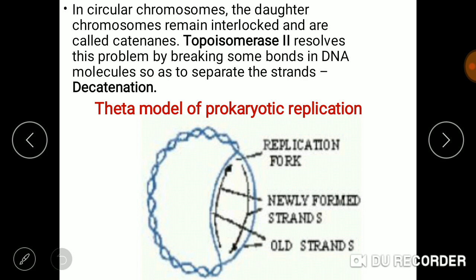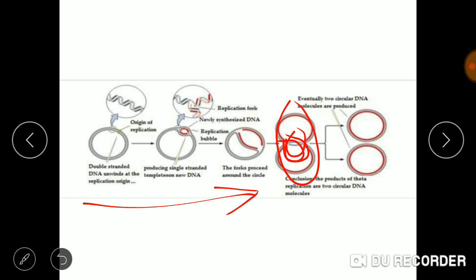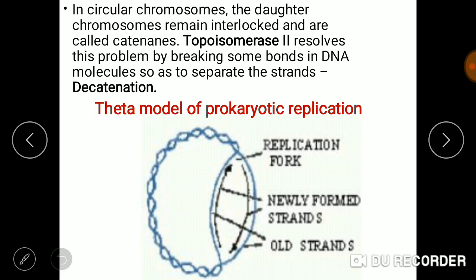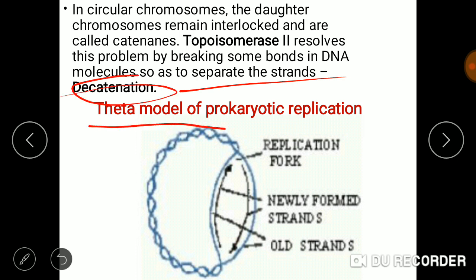In circular chromosomes, the daughter chromosomes remain interlocked and are called catenanes. This interlocked structure is produced when double-stranded DNA proceeds through replication. The problem of these two interlocked strands is resolved by topoisomerase II. Topoisomerase II solves this problem by breaking the bonds in the double strand to separate the strands — this process is called decatenation.